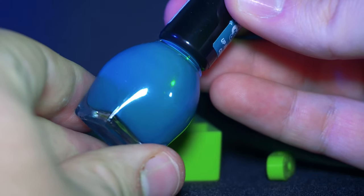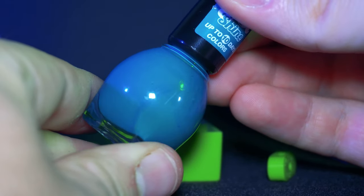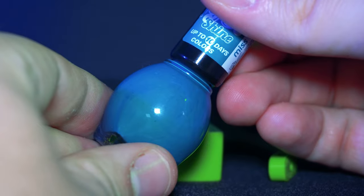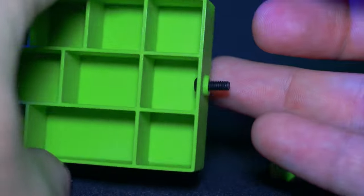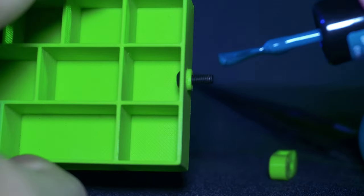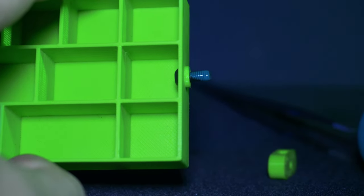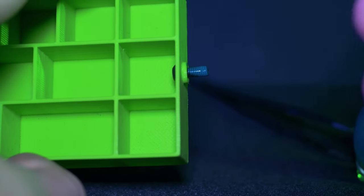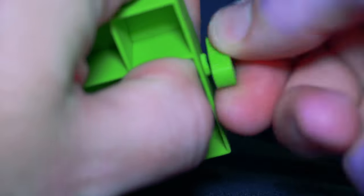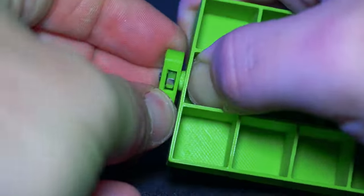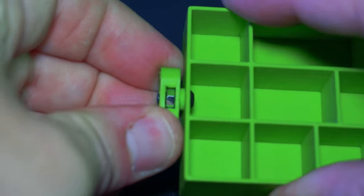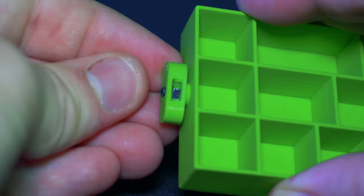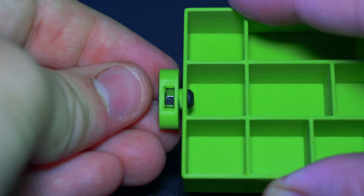Next I will put some nail polish on the threads of the screw so it doesn't come loose. You can also use threadlock. Now we will place the knot on the screw. Make sure you can still move it once it's tight. Now wait for the nail polish or threadlock to dry.